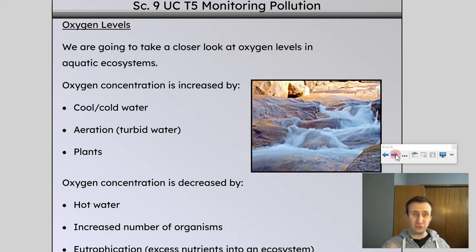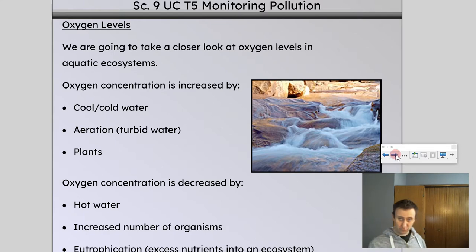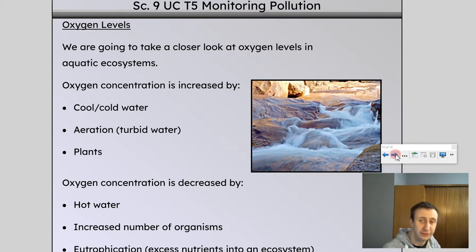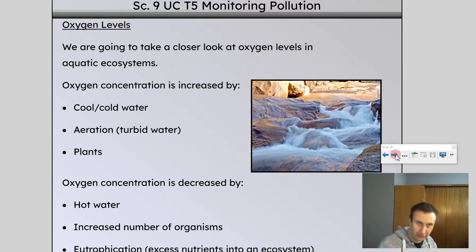Let's talk more about oxygen levels. How do we increase oxygen levels in aquatic ecosystems? Cool and cold water — it turns out the colder water is, the better it is at dissolving gases like oxygen. You can think about this like pop: cold pop is fizzier than warm pop because cold water is better at dissolving gases than warm water. Aeration — when we have turbulent water going over rocks, all of that movement causes oxygen to get dissolved and mixed in; it's basically like stirring in the oxygen.